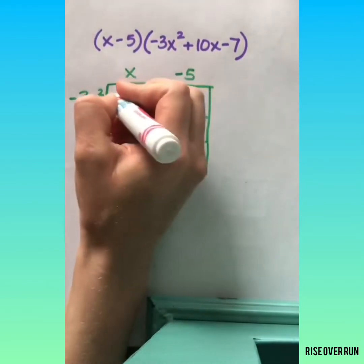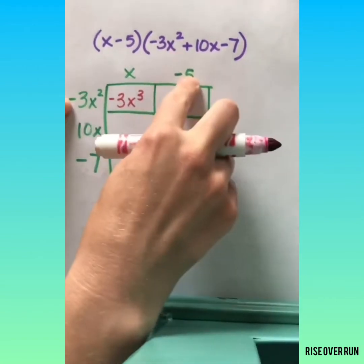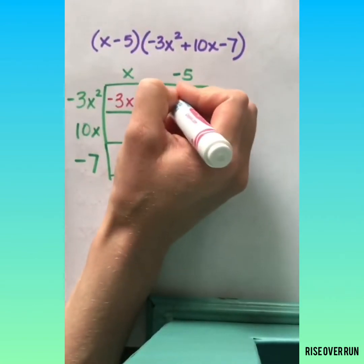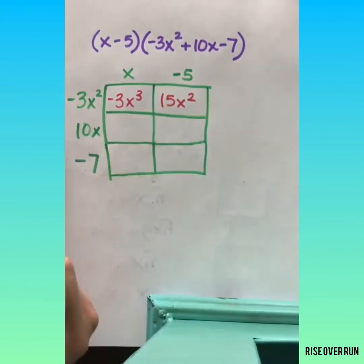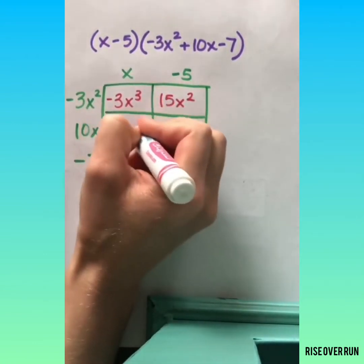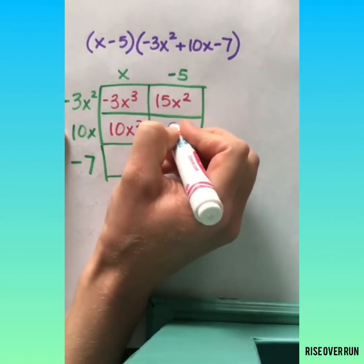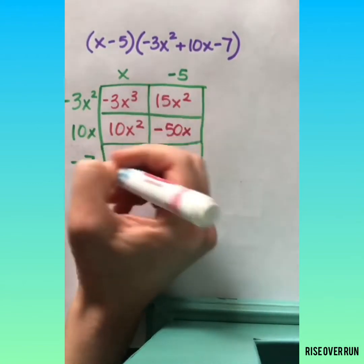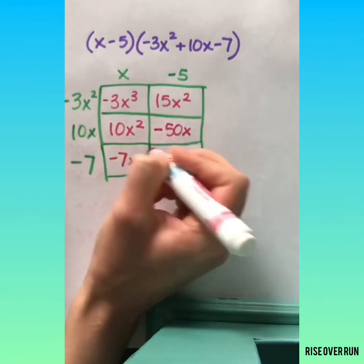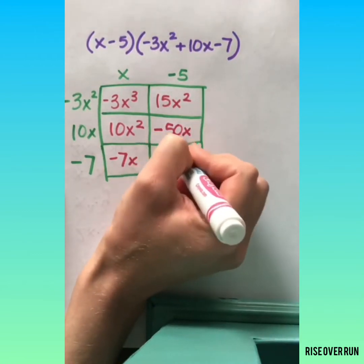Now let's multiply and fill in each box. Negative 3X times X is negative 3X cubed. Negative 3X times negative 5 is positive 15X squared. X times 10X. 10X times negative 5. X times negative 7.